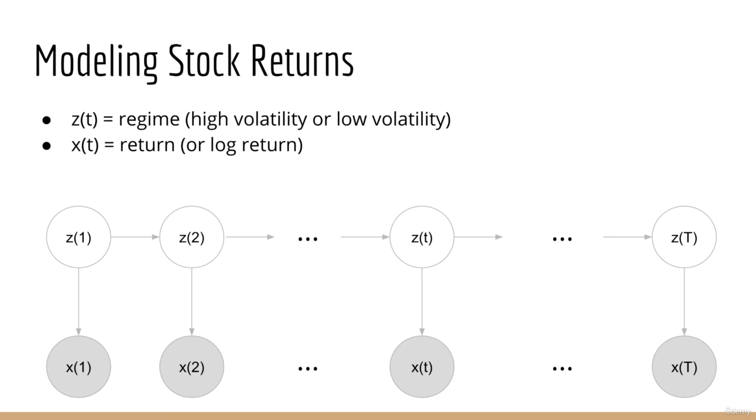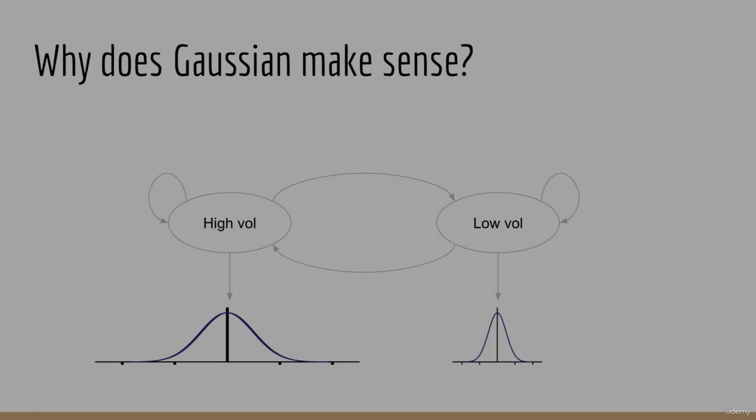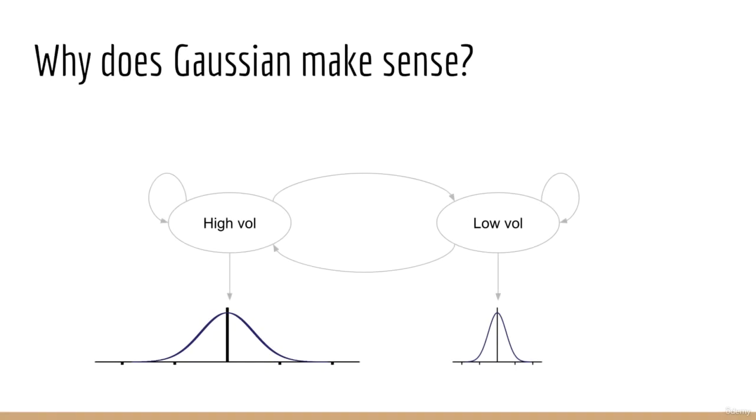So why does using a Gaussian make sense now, when previously we saw that it failed to model stock returns accurately? Going back to our non-graphical model, we can see why this makes sense. When we are in a low volatility regime, the return is sampled from a Gaussian with low variance. When we are in a high volatility regime, the return is sampled from a Gaussian with high variance.